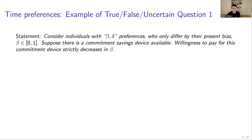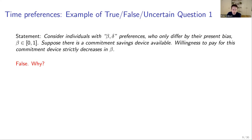Let me give some examples of true/false/uncertain questions. Consider individuals with beta-delta (quasi-hyperbolic) preferences who only differ by their present bias beta, with beta between 0 and 1. Suppose there's a commitment savings device available. The statement is: the willingness to pay for this commitment device strictly decreases in beta. The answer is false.